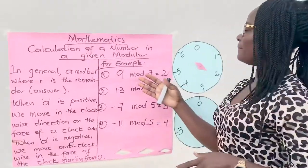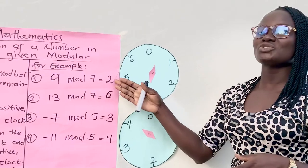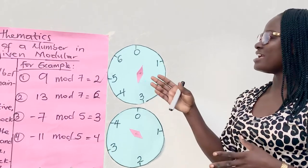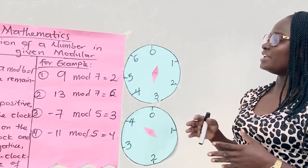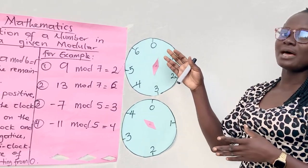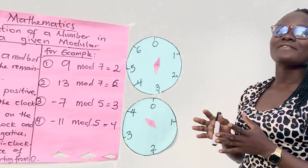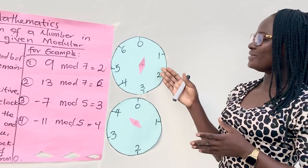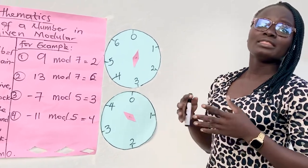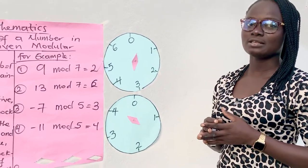The first example I have here is 9 mod 7 equals 2. How did it come about the answer? Let's go through together. I have this clock, and it is different from our normal clock. Our normal clock always has 12 divisions. This is having seven divisions: one, two, three, four, five, six, seven. Always, the modulo in which you are working on won't appear in your calculations.